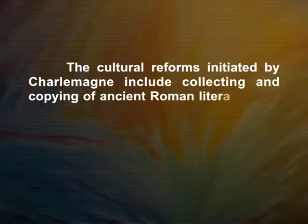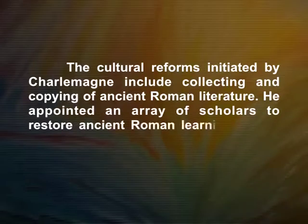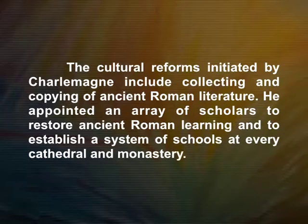Carolingian art. The Carolingian dynasty was founded by King Charlemagne's father and lasted from 751 to 987. Charlemagne built an empire that did not outlast his death, but the cultural revival the empire spawned proved more durable. Monasteries became small cities where manuscripts were mass-produced. Goldsmithing and the use of precious and semi-precious stones were invoked. The cultural reforms initiated by Charlemagne include collecting and copying of ancient Roman literature. He appointed an array of scholars to restore ancient Roman learning and to establish a system of schools at every cathedral and monastery. Carolingian revival can be termed the first and most important phase of the fusion of the Celtic-Germanic flavor with that of the Mediterranean world.